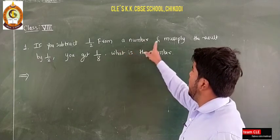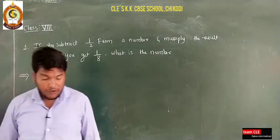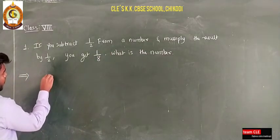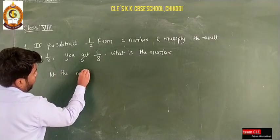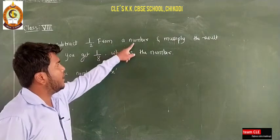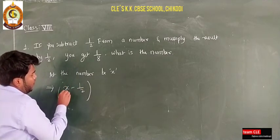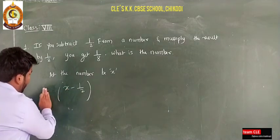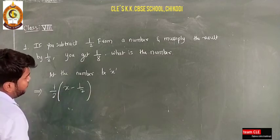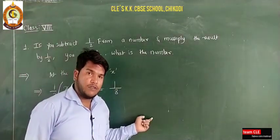First, create the equation. We do not know the number, so let the number be x. Subtracting 1/2 from the number gives x minus 1/2. Multiplying the result by 1/2 gives: (x − 1/2) × (1/2) = 1/8. This is the equation according to the question.